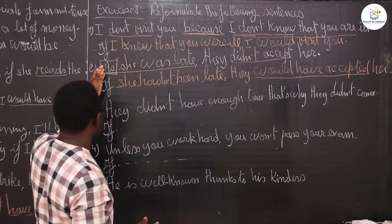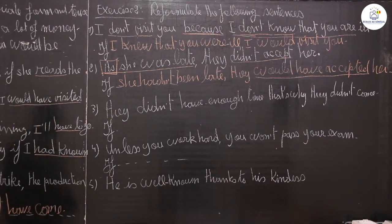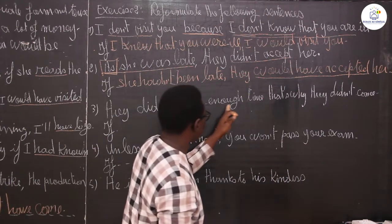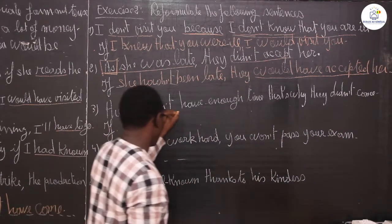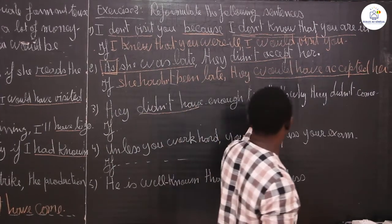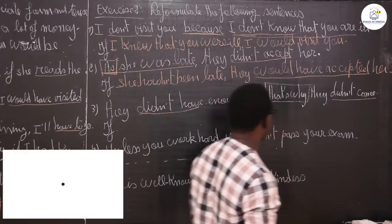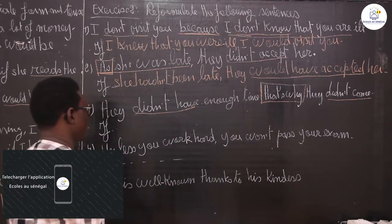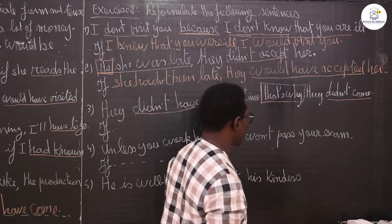In this sentence, 'as' is at the beginning — that's why there is no change in position compared to a 'because' sentence; it works the same way. Number three: 'They didn't have enough time, that's why they didn't come.' The link word here is 'that's why.' Both clauses are in the negative form. So where is the cause? The cause — 'they didn't have enough time' — is on the left.